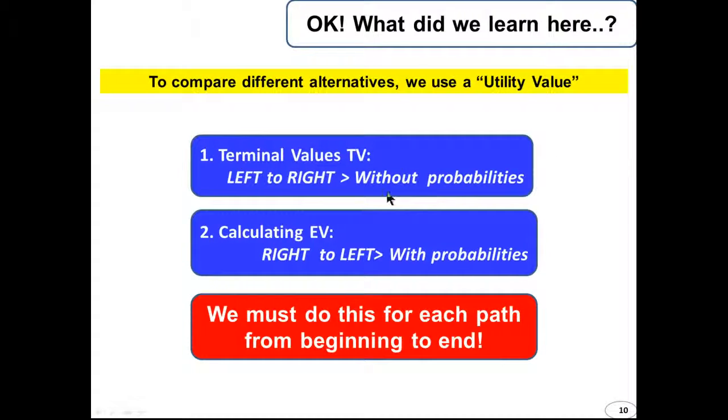We learnt about terminal values that we must go from left to right without probabilities. We learnt about calculating the expected value where we go from right to left with probabilities. And we must do this for each path from beginning to end. This is the end of this video.